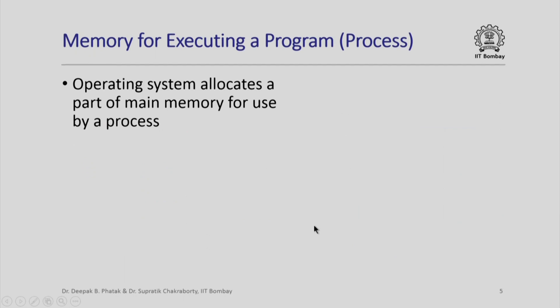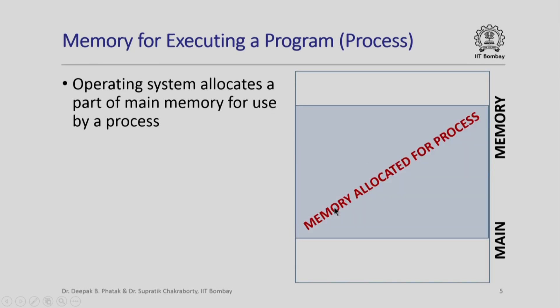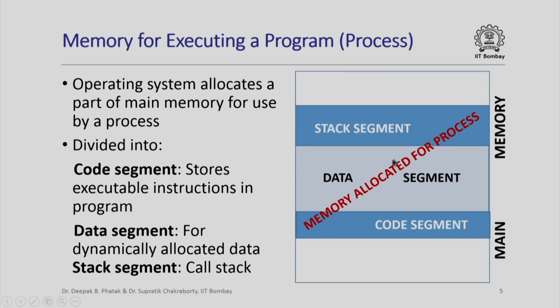If you recall from our earlier lectures, we had said that when a program executes, or in other words when a process runs, the operating system allocates a part of main memory for use by the process. This memory in turn is divided into three segments: the code segment which stores the executable instructions in the program, the data segment for dynamically allocated data, and the stack segment which basically stores the call stack, which has the activation records of all functions that are called in the program. Each activation record has memory allocated for all local variables of the corresponding function.